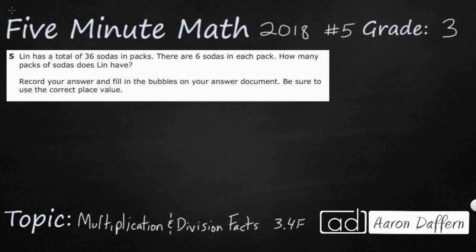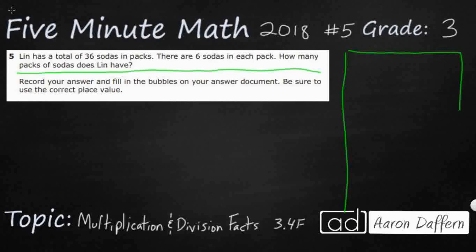The problem is actually just this top part right here. The bottom part is actually directions on how to answer the question, because there are no multiple choice selections — there's no A, B, C, and D to choose from. So we're going to have to create a bubble sheet over here on the side, and we'll look at that once we have our answer.